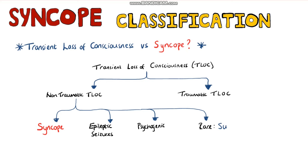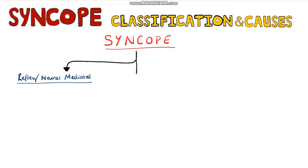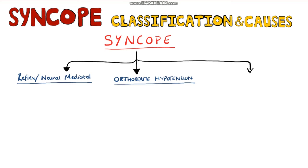The problem clinically with syncope is discerning the really serious — and by that I mean potentially lethal — causes of syncope. The causes are divided into reflex or neural-mediated syncope, orthostatic hypotension, and cardiac causes.